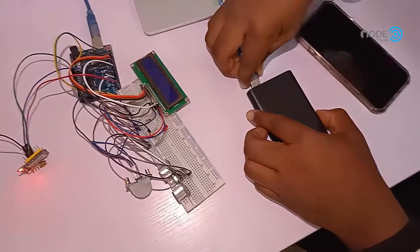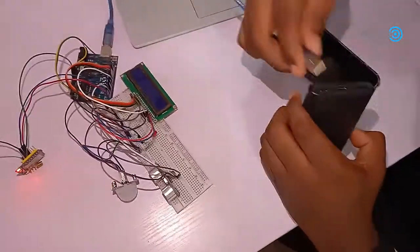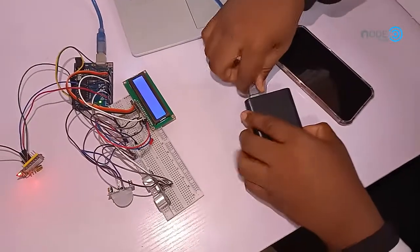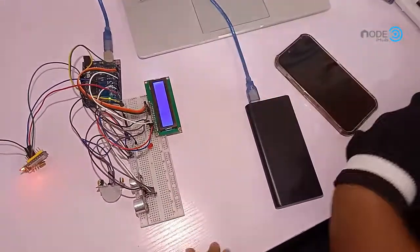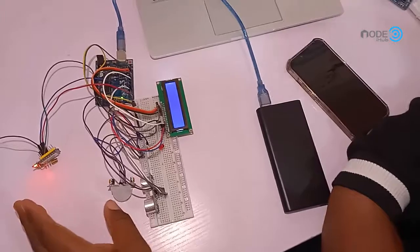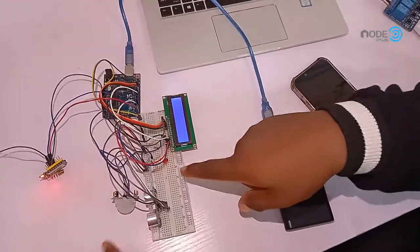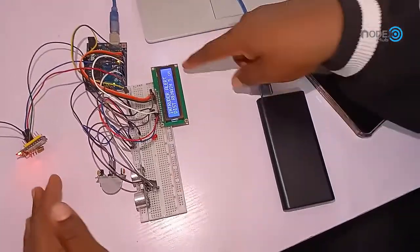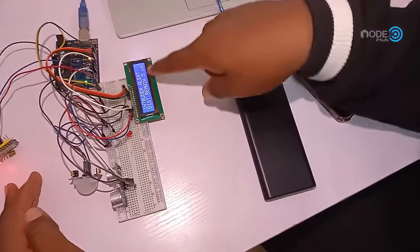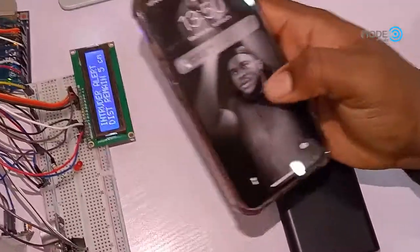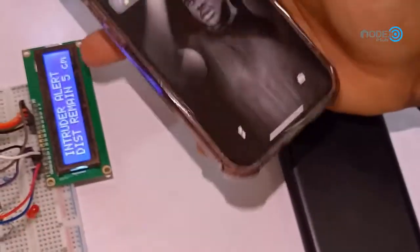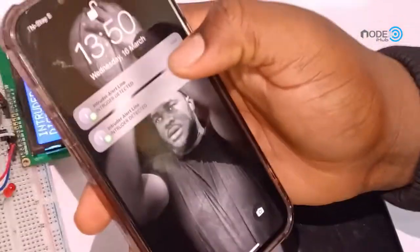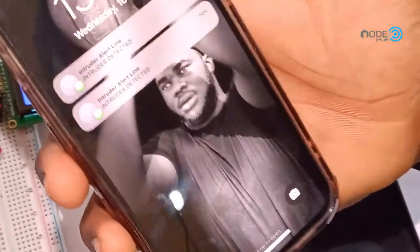So my Arduino, the system comes on. Then it detects a human. Then the ultrasonic sensor measures the distance. Then I get an SMS notification on my phone that an intruder has been detected.